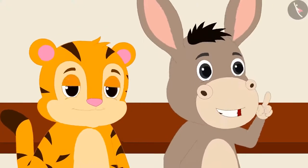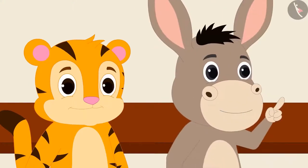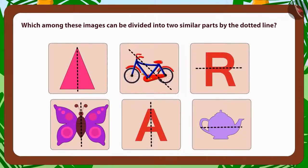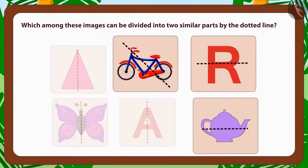Children, can you guess which among these images can be divided into two similar parts by a dotted line? These are images that are being divided into two similar parts by the dotted lines. And these are not getting divided into two similar parts.